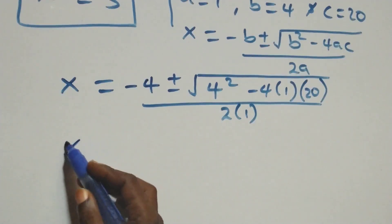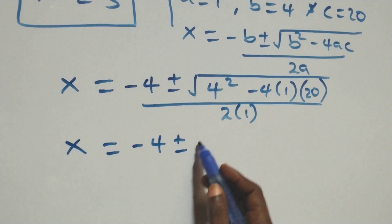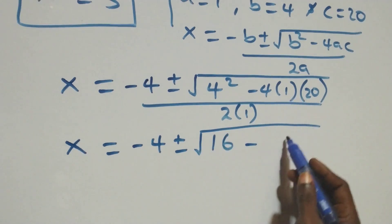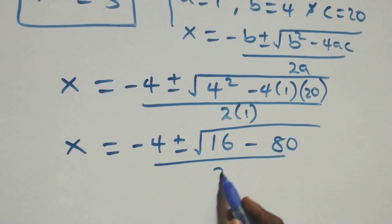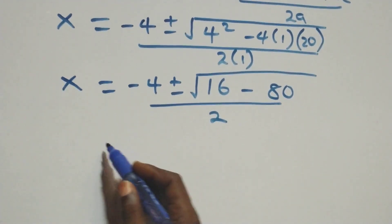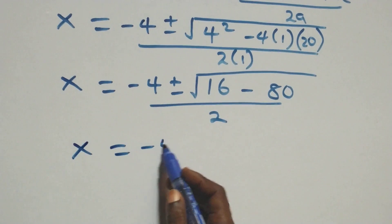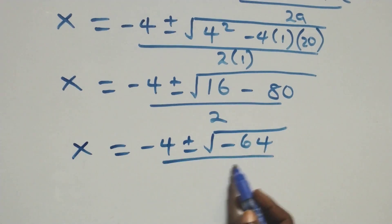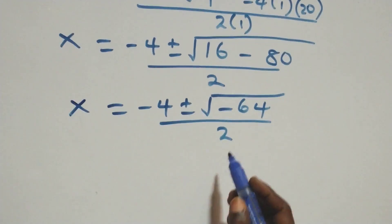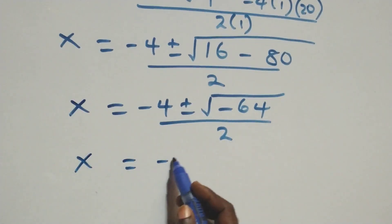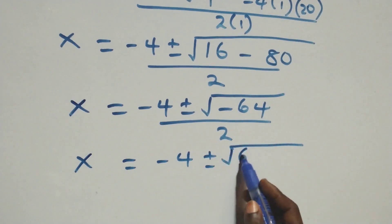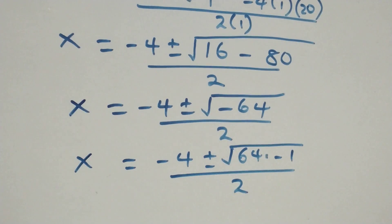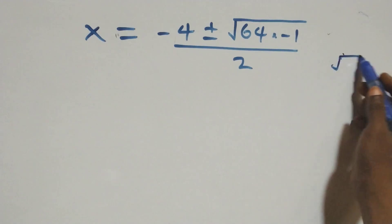That is, x equals to minus 4 plus or minus square root of 16 minus 80, all over 2. This gives us x equals to minus 4 plus or minus square root of negative 64, all over 2. We can write negative 64 as 64 times negative 1, so this is x equals to minus 4 plus or minus square root of 64 times square root of negative 1, all over 2.